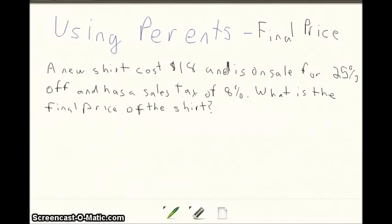We're going to talk about using percents to find the final price. A new shirt costs $18 and is on sale for 25% off. It also has a sales tax of 8%. What is the final price of the shirt? We're going to have to do two steps on this.